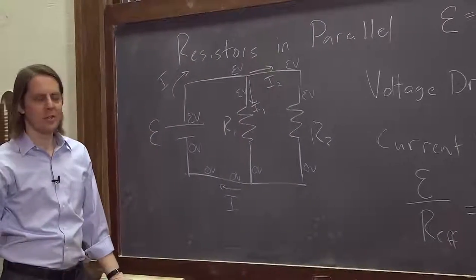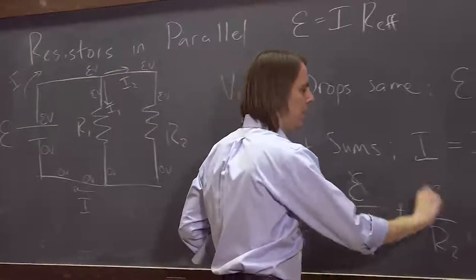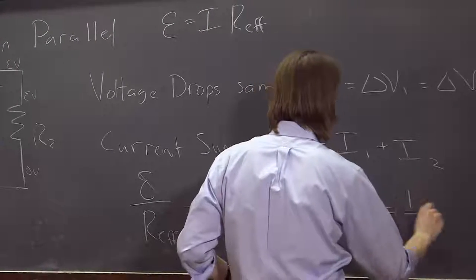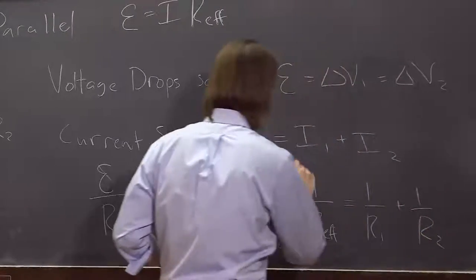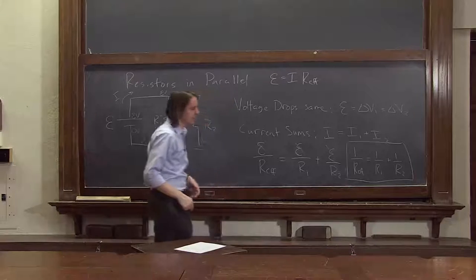So when you look at that equation, you can see, just cancel the EMFs. And this is how they add. 1 over the effective resistance is 1 over R1 plus 1 over R2. So they add as reciprocals like that.